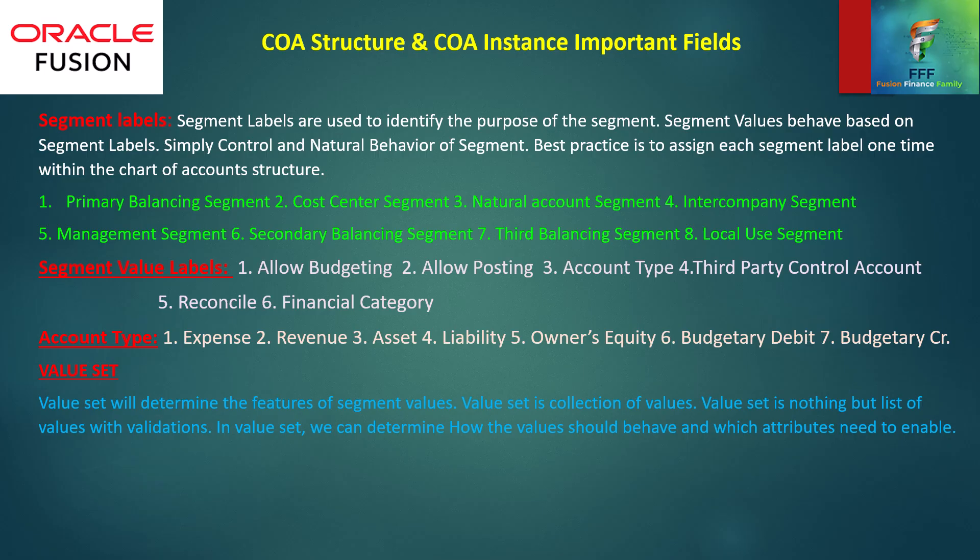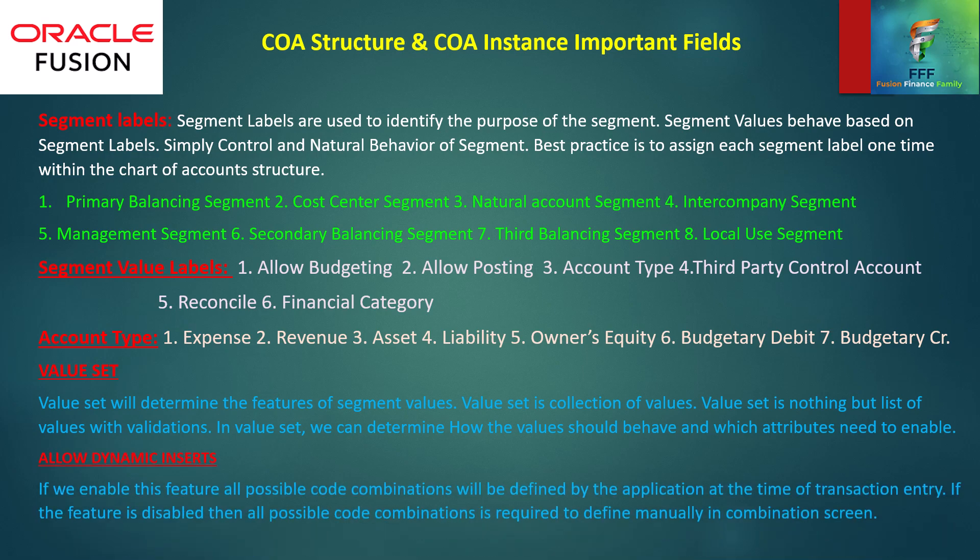Now we have to know about value sets. A value set will determine the features of segment values. A value set is a collection of values — essentially a list of values with validation. In a value set, we can determine how values should behave and which attributes need to be enabled. The last feature is allow dynamic insert.